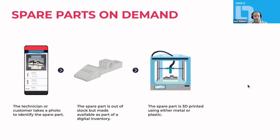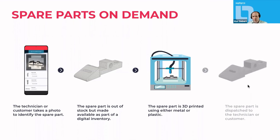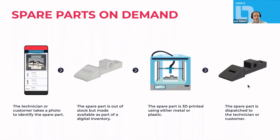The workflow is end-to-end — your technicians or customers just need a mobile phone. The part can be easily identified, and if it's available in the digital inventory, it can then be printed by trusted providers and subsequently shipped to you or directly to the customer in packaging you've specified in advance. For example, if you're an OEM, you can have your OEM branding and a serial number on the part — and that's what we think will significantly change the way you do after-sales service.